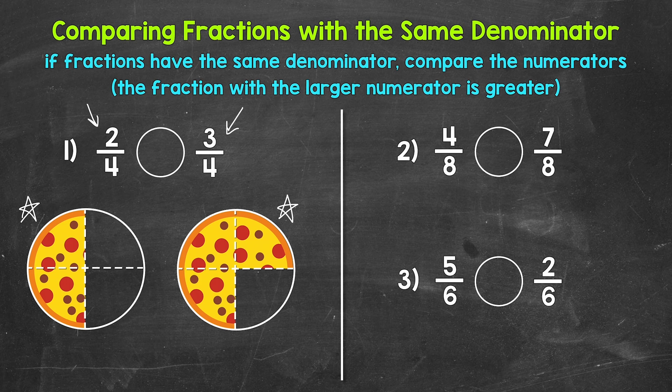Since both pizzas were divided into the same number of equal pieces — four — all we had to do was look at the numerators to see which pizza had more left. When we have the same denominator, we have wholes divided into the same number of equal pieces, so all we have to do is see which fraction has more pieces — which has a larger numerator. Three-fourths is greater. Our comparison symbol always opens up towards whatever is greater, so we read this as two-fourths is less than three-fourths.